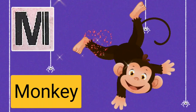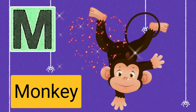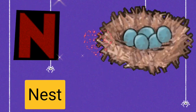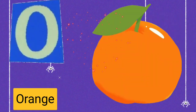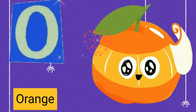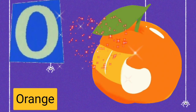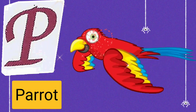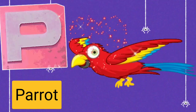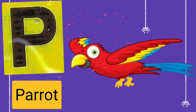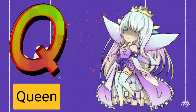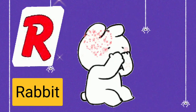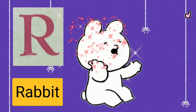L for lion, M for monkey, N for nest, O for orange, P for parrot, Q for queen, R for rabbit.